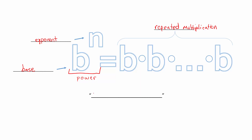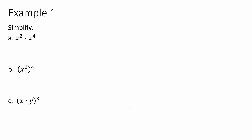We read this power as 'b to the n,' although there are special powers with different names. If we have 5 to the second power, we can say 'five squared.' Seven to the third power uses the word 'cubed.' Those words relate to dimensions — squares are 2D figures, cubes are 3D figures — that's how you can remember why two is squared and three is cubed.